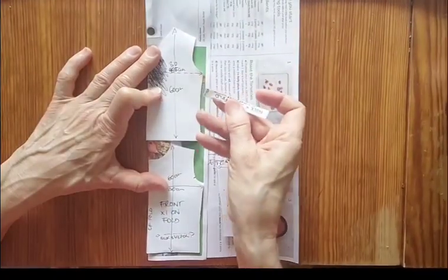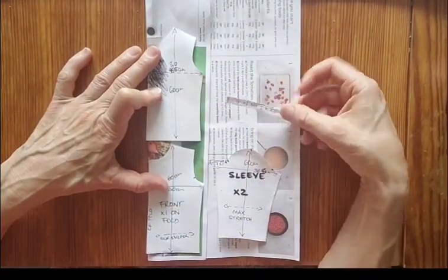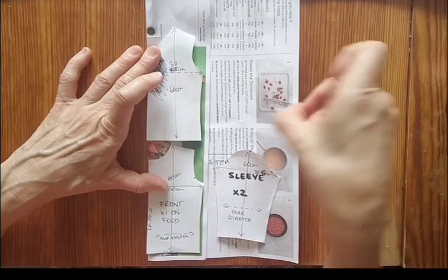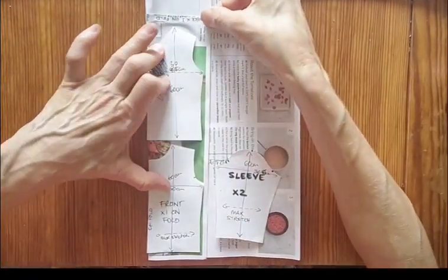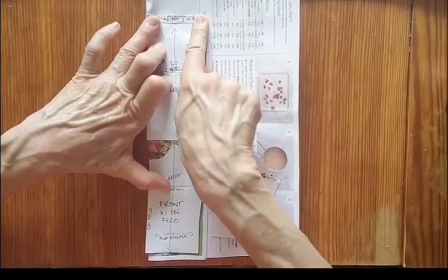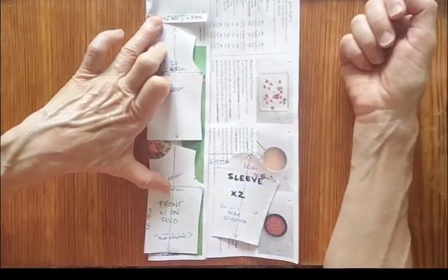Now we've got our little neck piece as well. Now that, because it's cut on the fold there, is not going to fit here, can you see? So we actually are going to need to place it on the fold with the others and it does actually fit on that width, so that's fine.